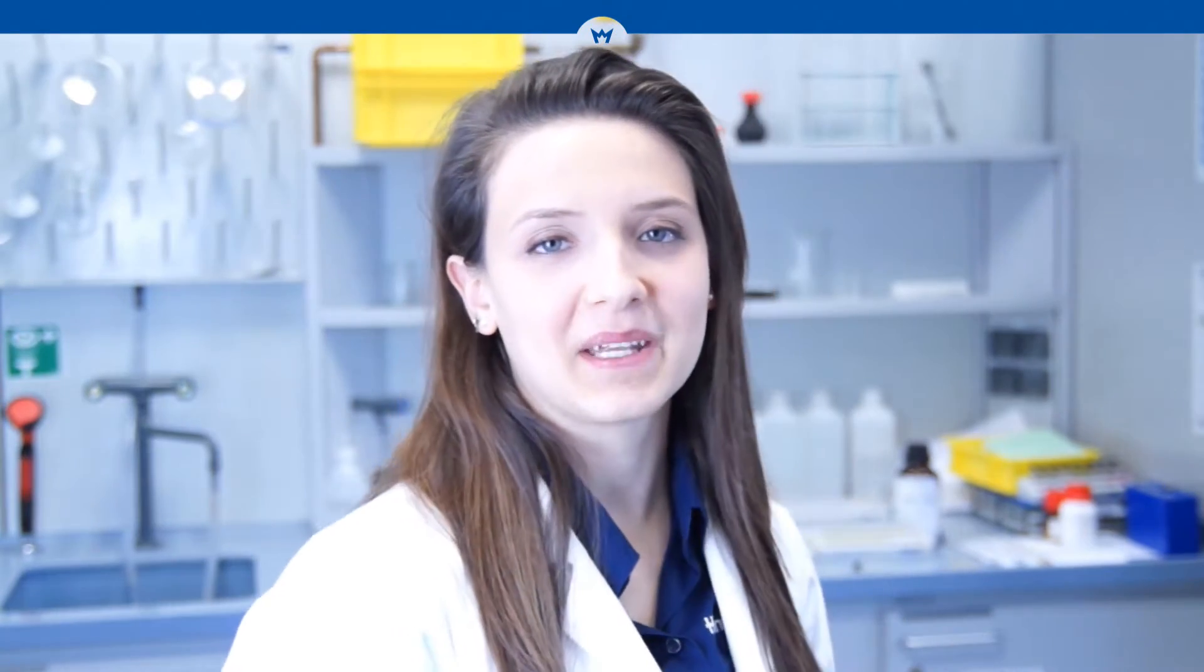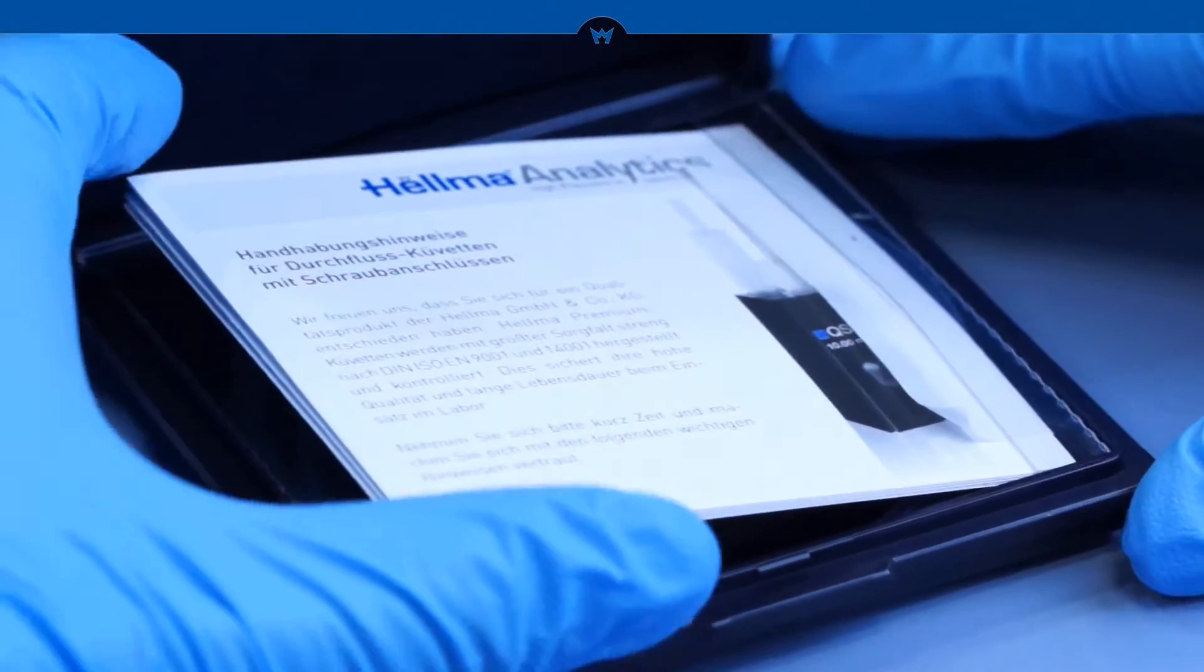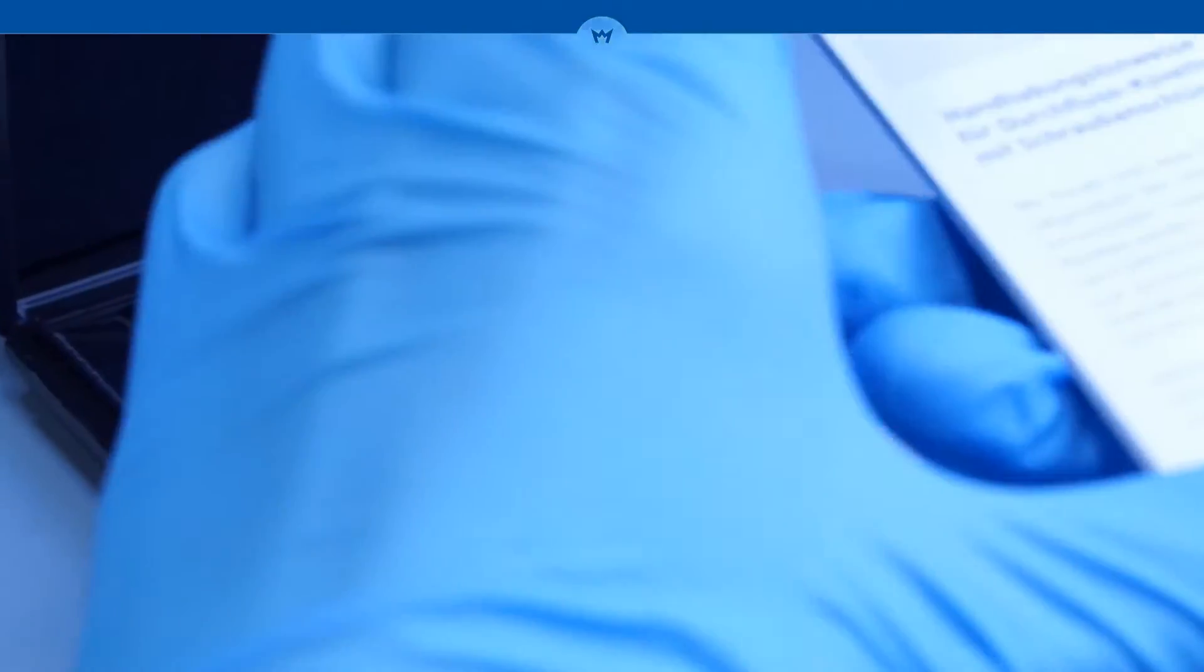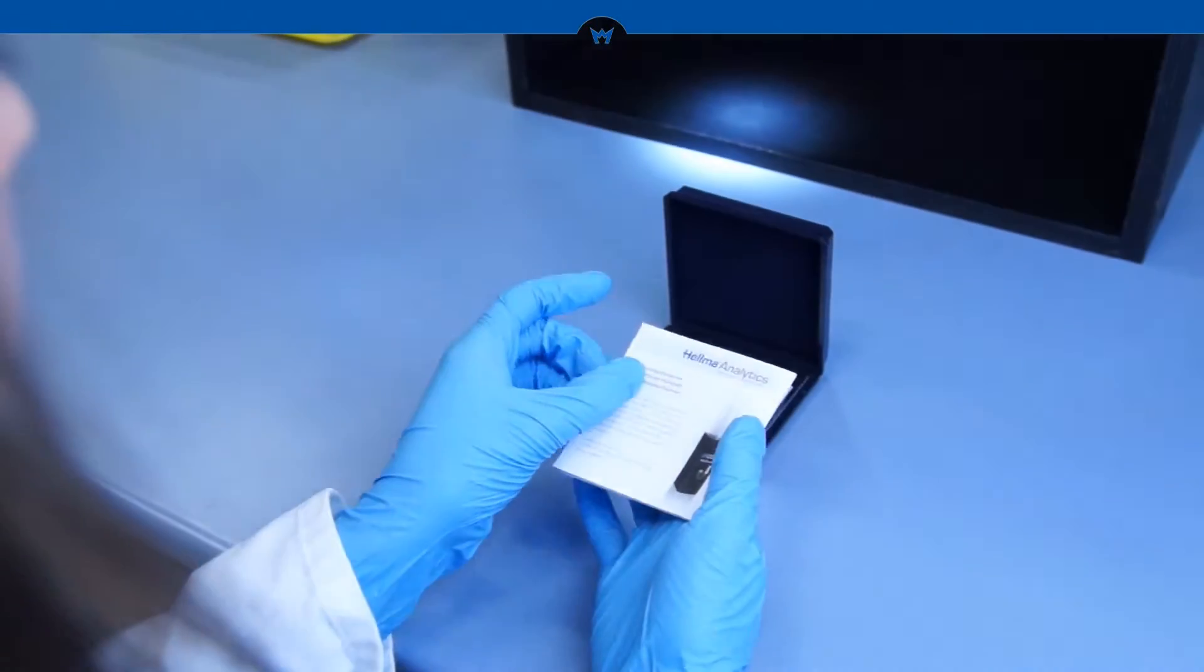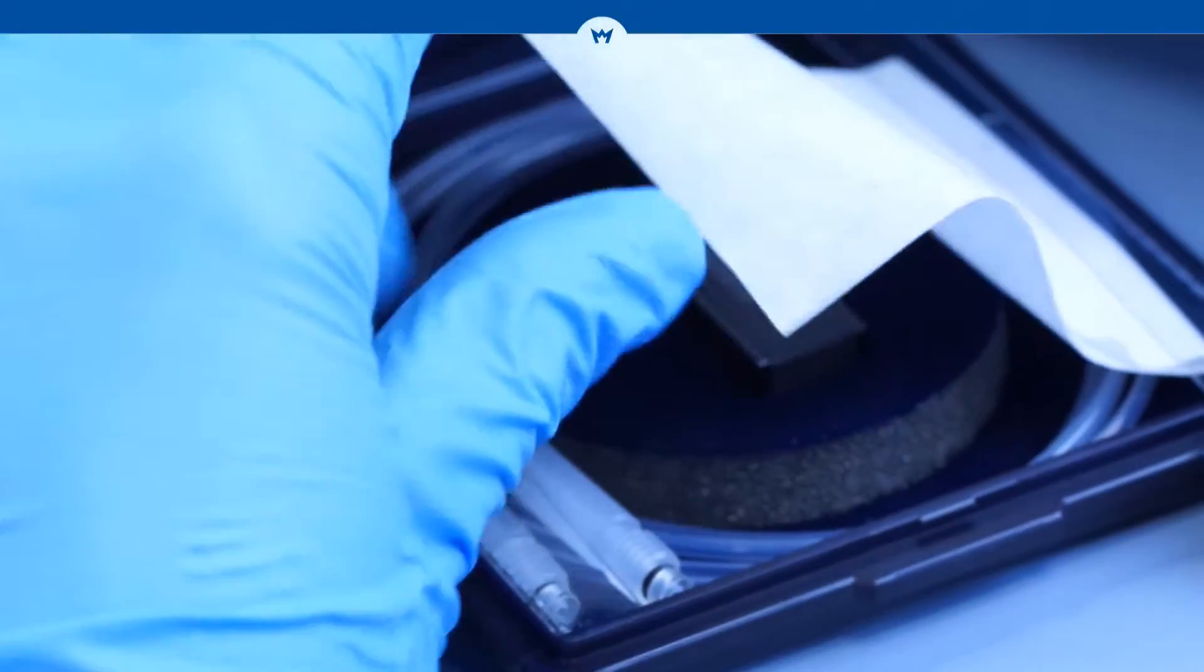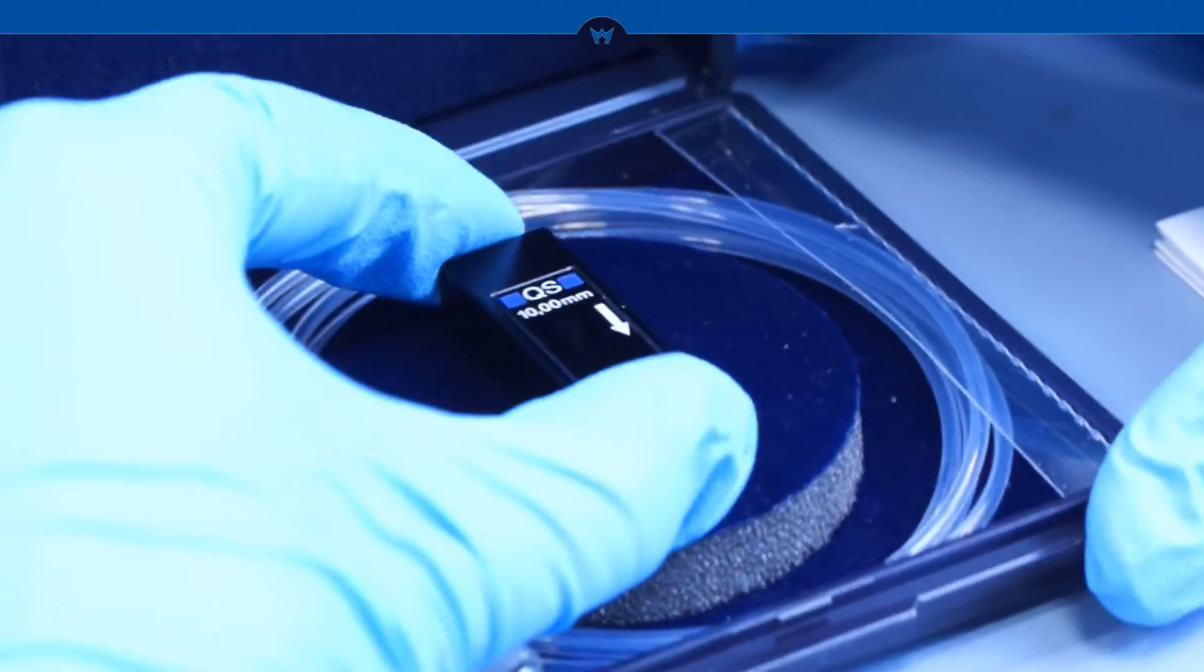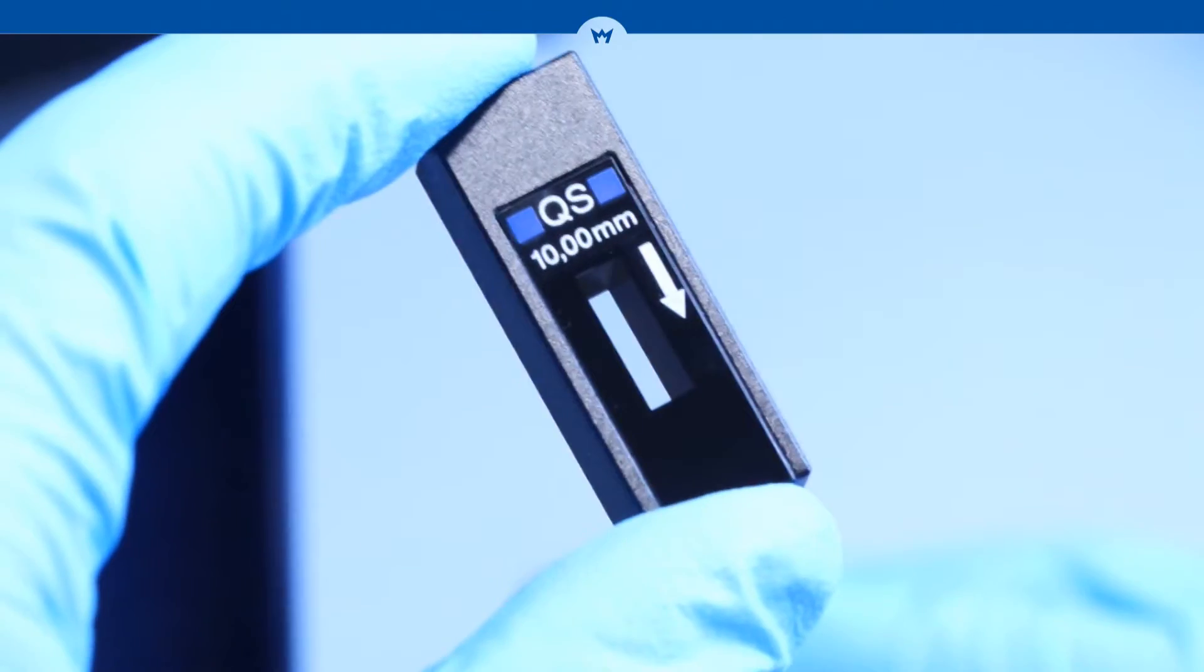Here we use a flow-through cell with an aluminium frame, 100 mm path length and 50 mm center height. This booklet contains lots of helpful information. Please note that the flow-through cell should be cleaned before each use. This one here has already been cleaned.